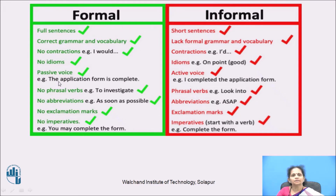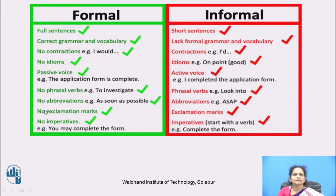Generally, whenever we are speaking or writing formal language, we have to use passive voice. For example: 'The application form is complete.' But in informal language, we generally use active voice. For example: 'I completed the application form.' In formal language, no phrasal words, no abbreviations, no exclamation marks, and no imperatives can be used. But in informal language, phrasal verbs, abbreviations, exclamation marks, and imperatives are allowed.